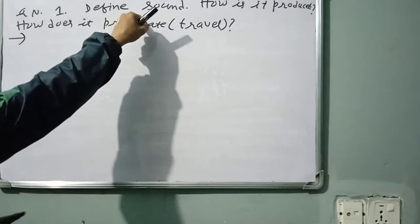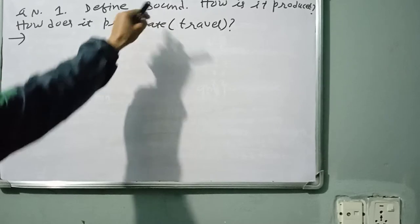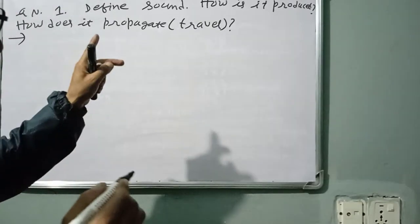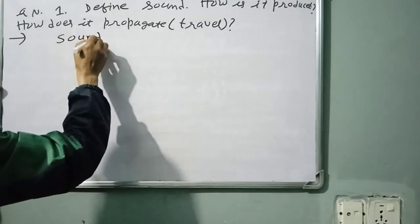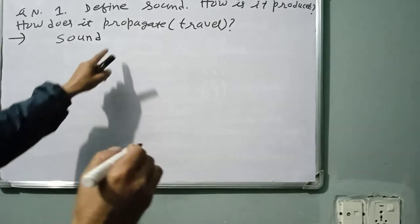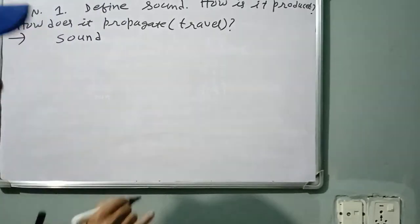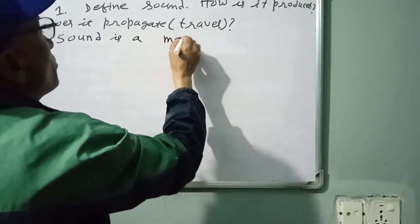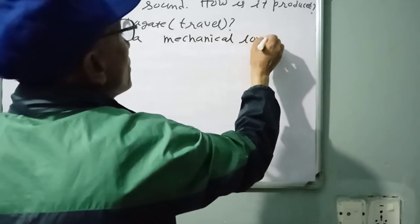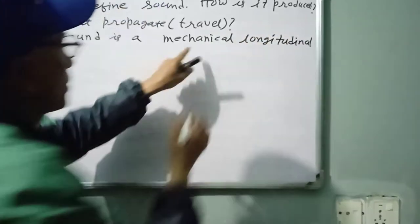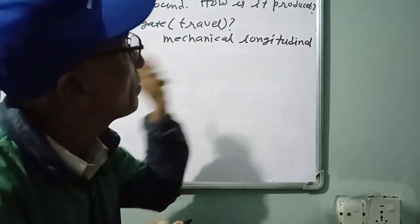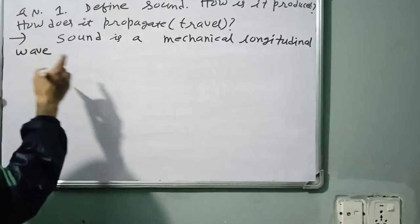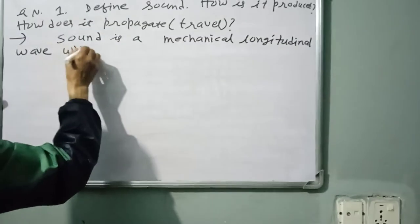In lower classes you learned: sound is a form of energy which gives the sensation of hearing. That definition is also correct and you may use it. But for Class 9 standard, sound is a mechanical longitudinal wave. 'Mechanical' means it needs a material medium; 'longitudinal' means it travels in the forms of compressions and rarefactions.